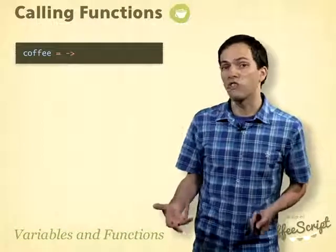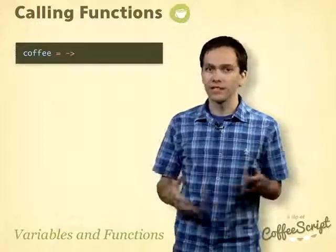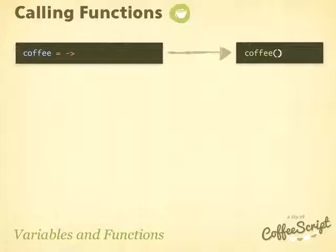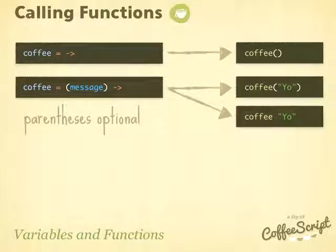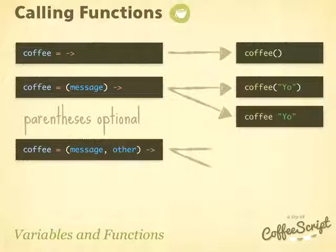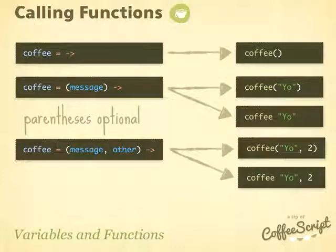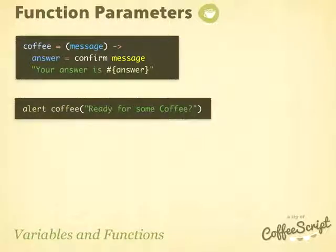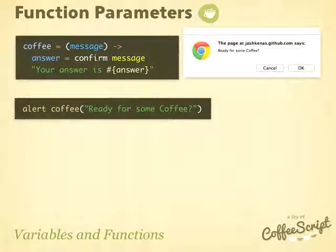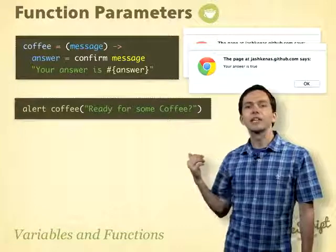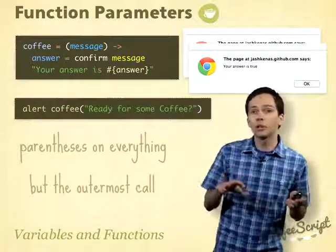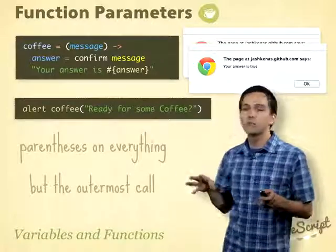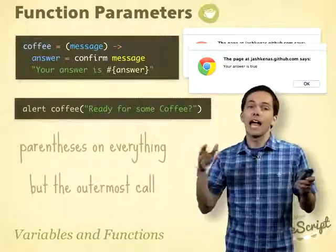Let's talk about how to call functions in CoffeeScript. If I have a function with no parameters, I can call it just as 'coffee'. If I have a function with one or two parameters, I can call it with or without the parentheses — they're optional. Let's call our coffee function and put the return value into an alert. It'll print the confirm box, return a string, and alert will be called on that string. It's best practice to use parentheses on everything but the outermost function call.